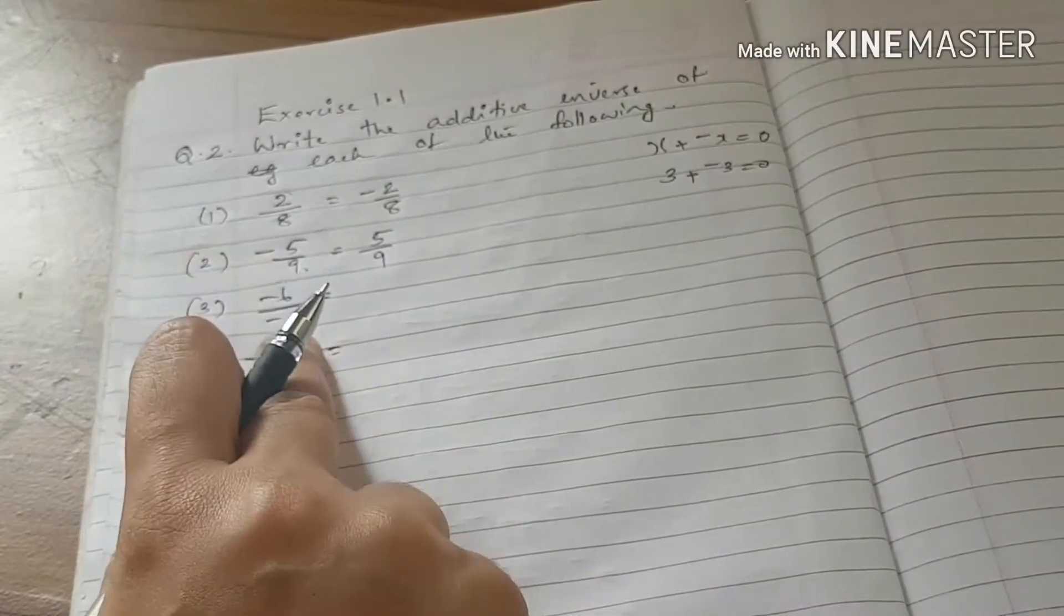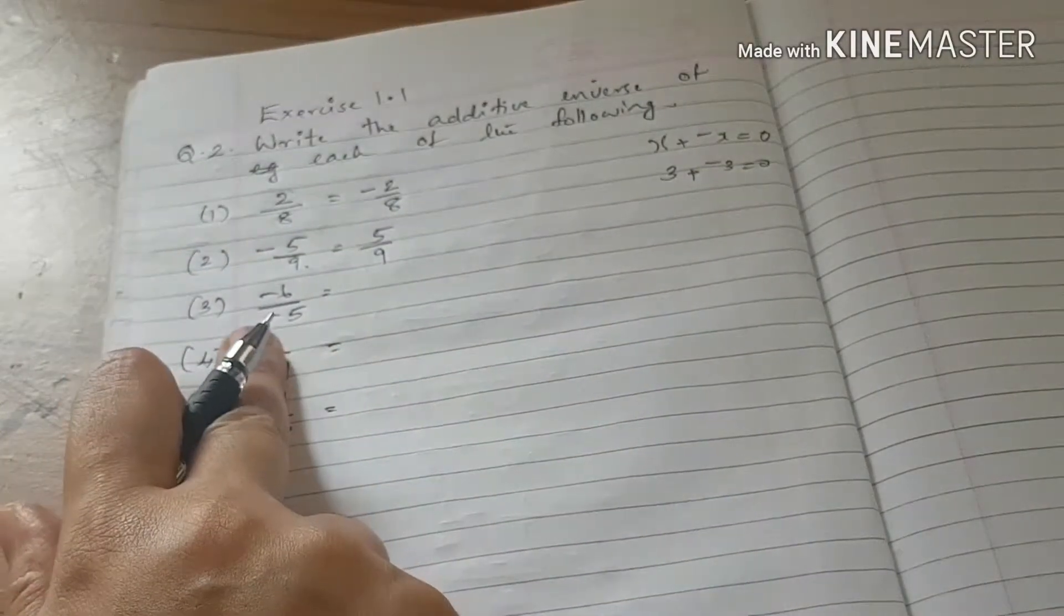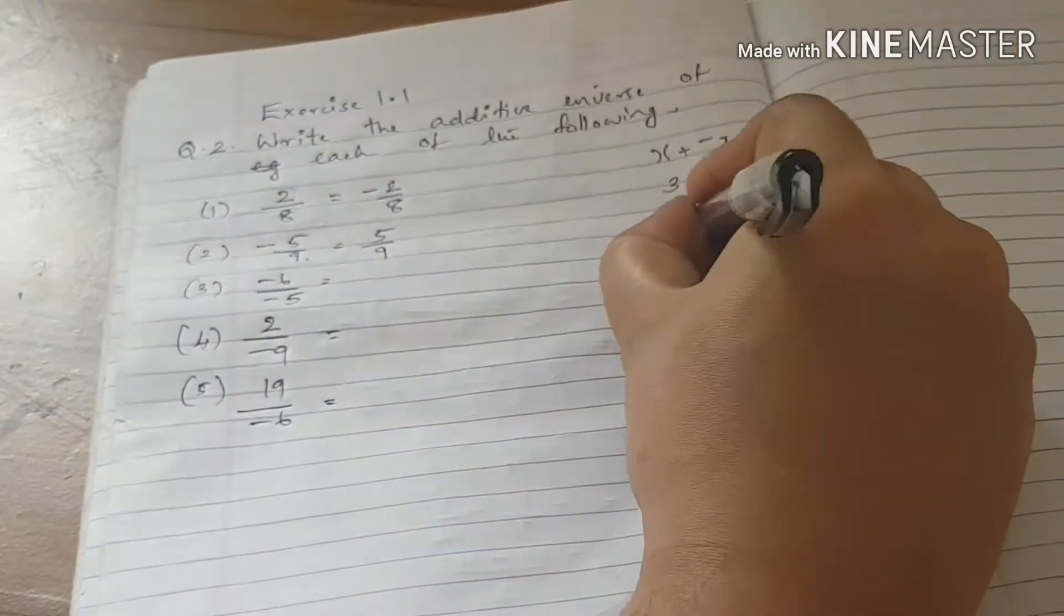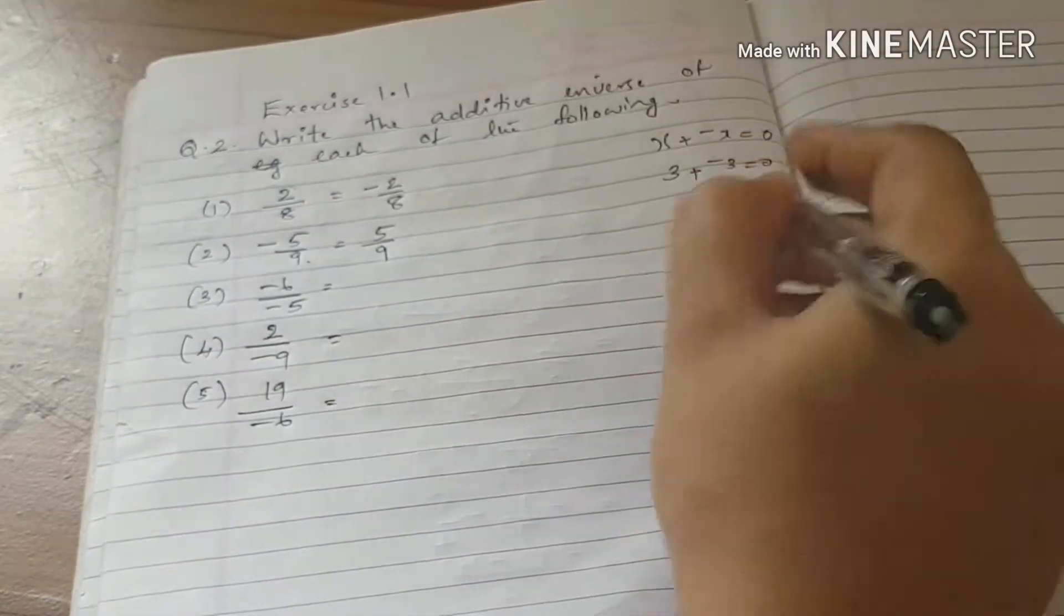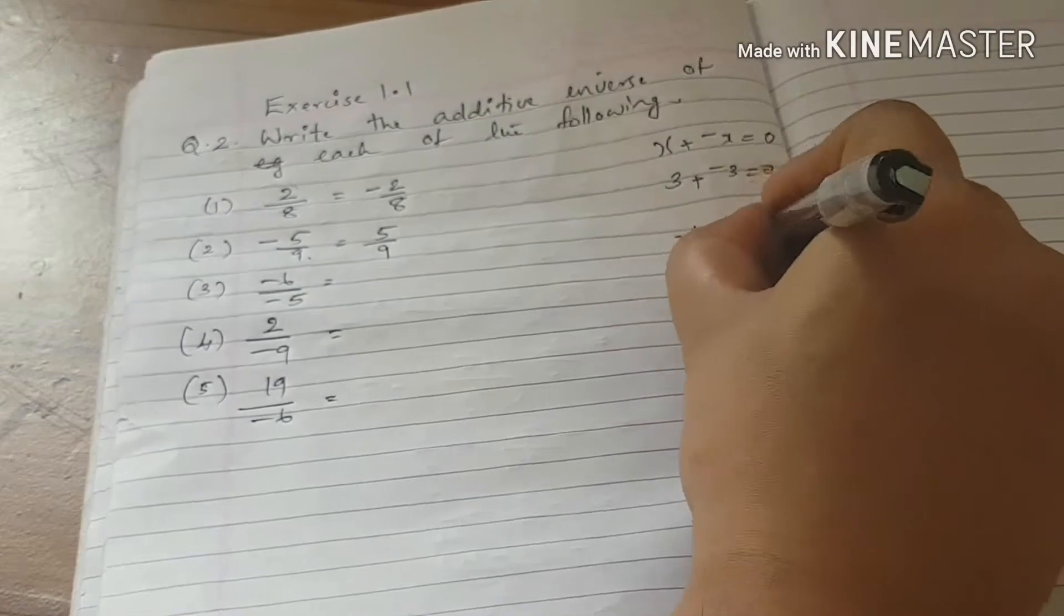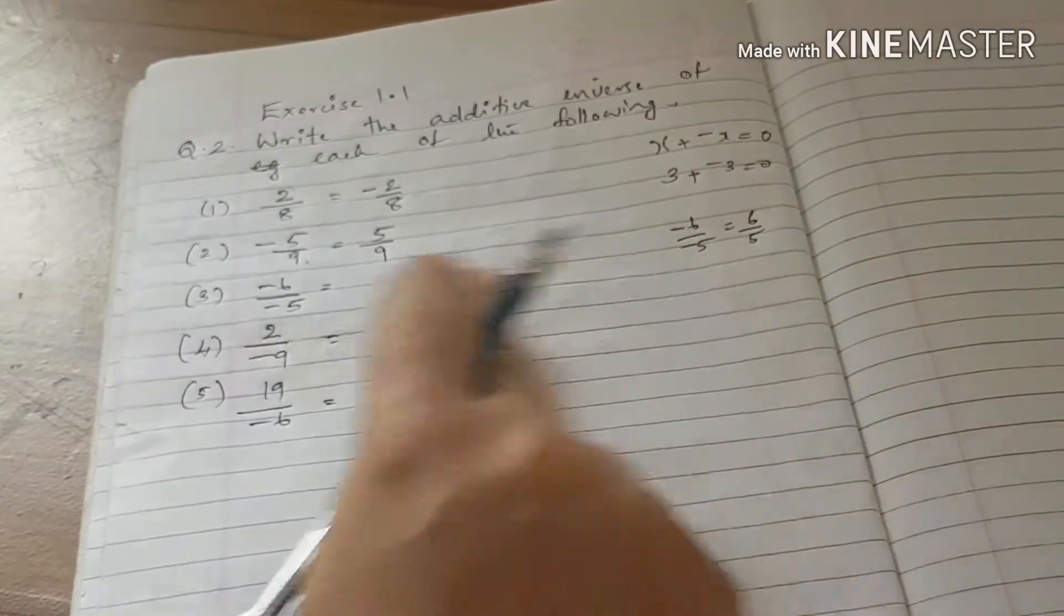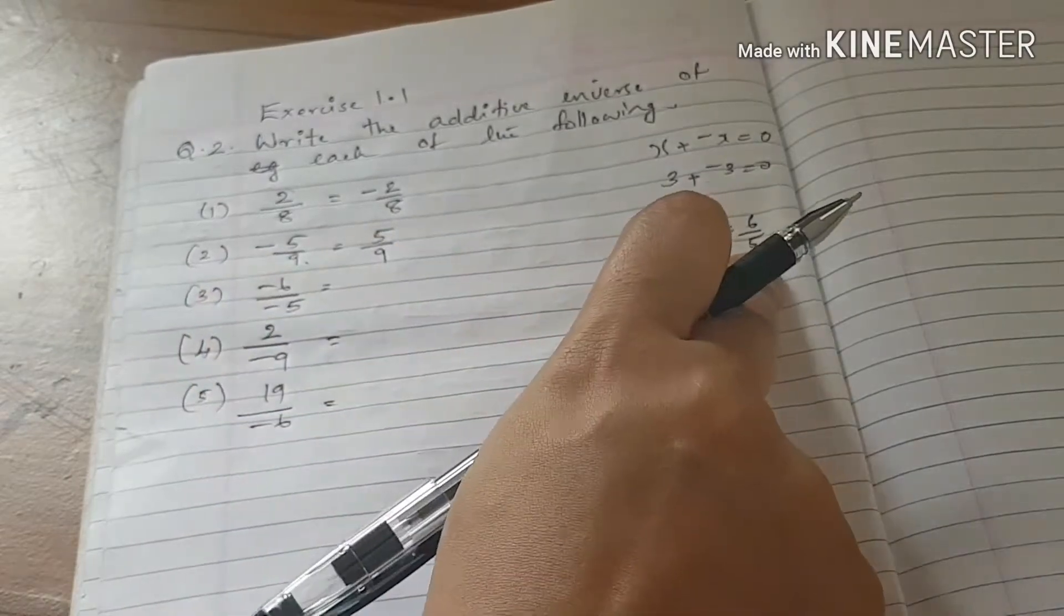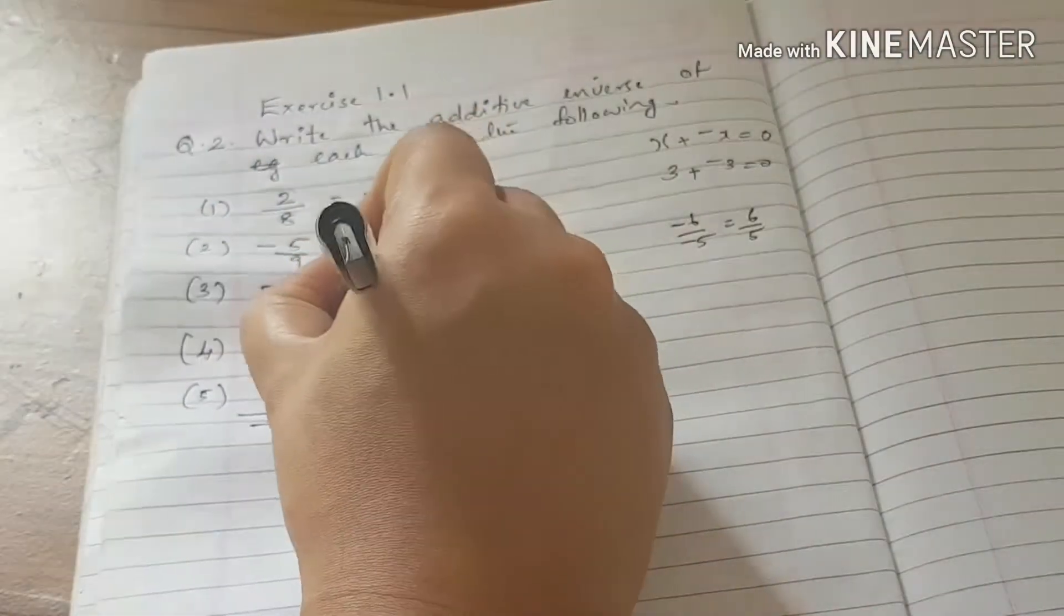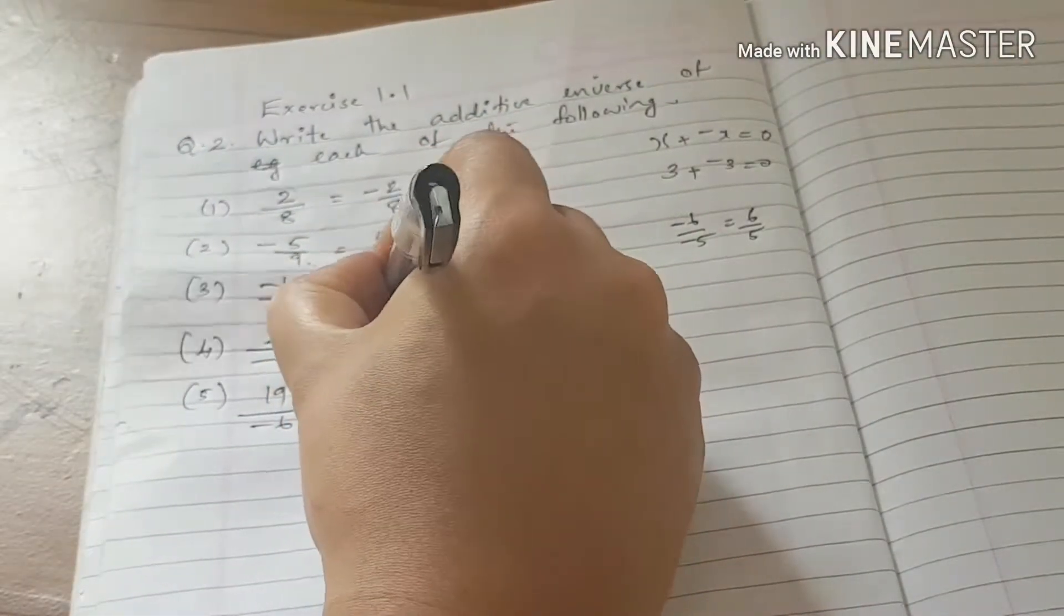This is minus 6 divided by minus 5. The numerator and denominator are negative numbers, so that is positive: 6 by 5. Minus 6 by minus 5 equals 6 by 5. The additive inverse is negative: minus 6 divided by 5.